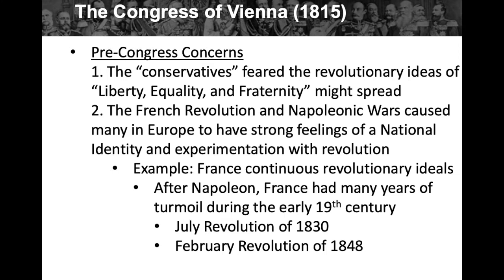Pretty much the rest of this PowerPoint we're going to be talking about the Congress of Vienna of 1815. The Congress of Vienna is a pretty important event because it sets up the stage for 19th century Europe, which will then set another stage for the First World War. Before we get into the Congress itself, there are some pre-Congress concerns. The conservatives feared the revolutionary ideas of liberty, equality, and fraternity spreading — these are Enlightenment ideals.